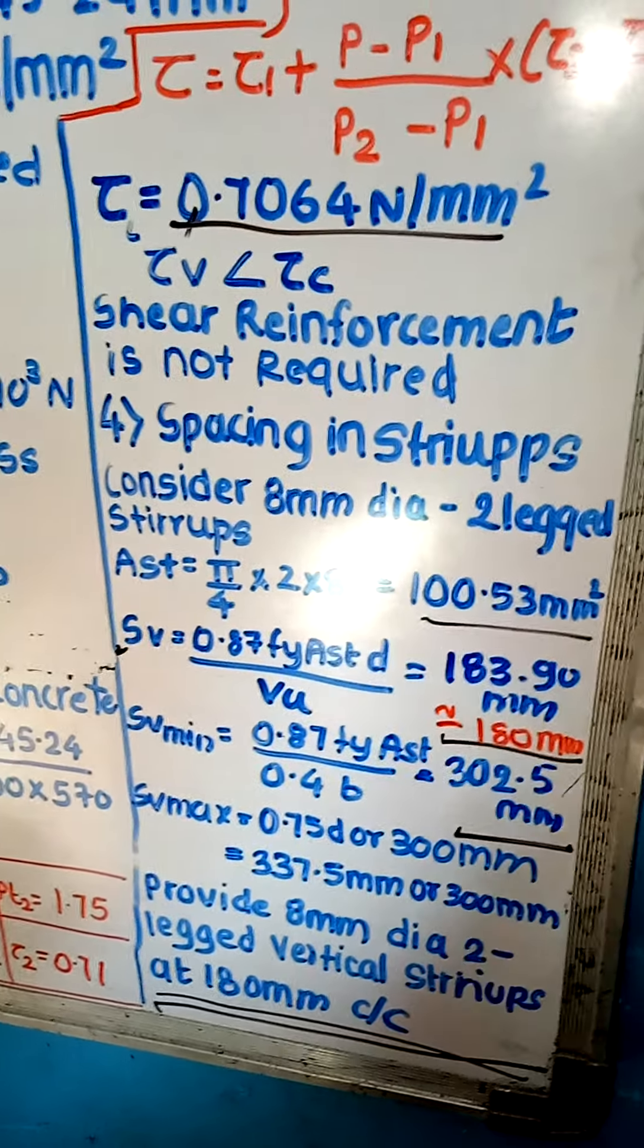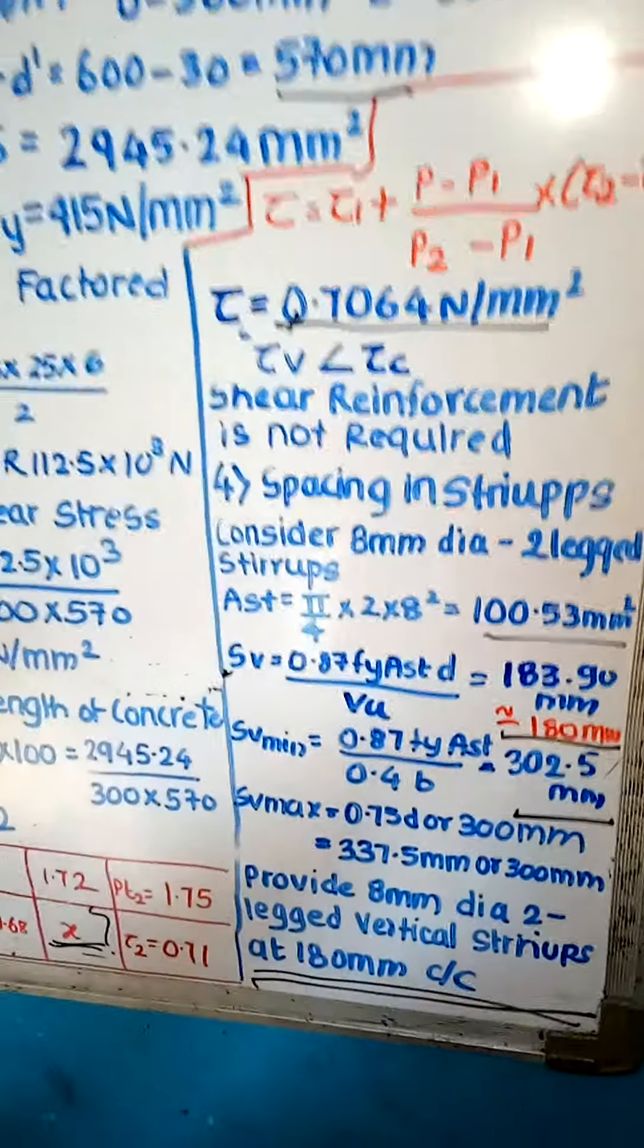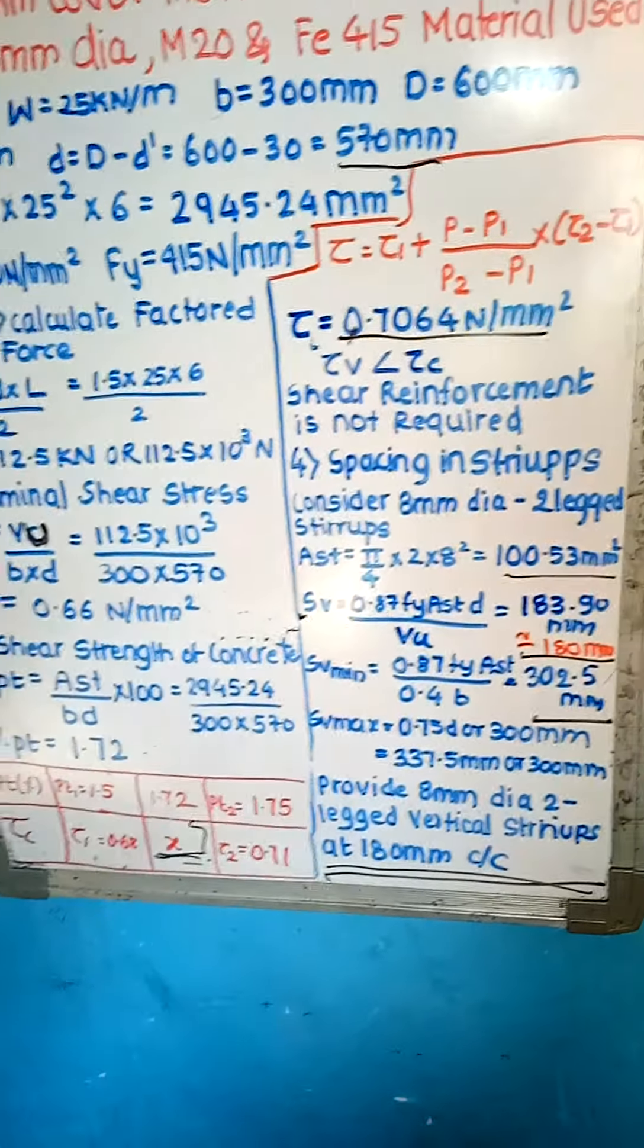Provide 8 mm dia 2 legged vertical stirrups at 180 mm spacing center to center. This is how we provide shear reinforcement for this problem. Now thank you.